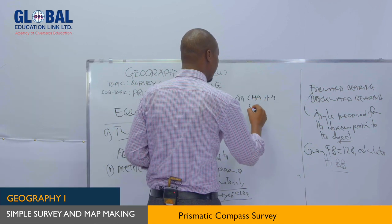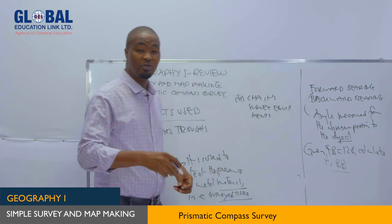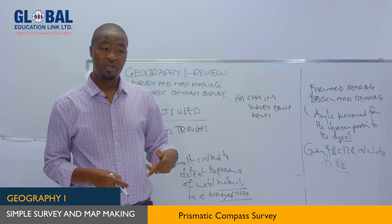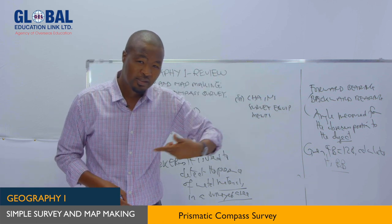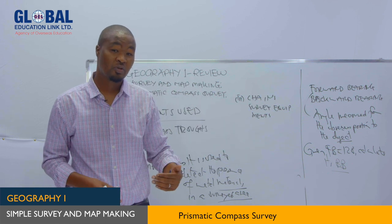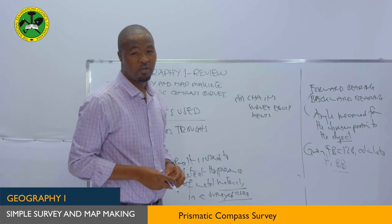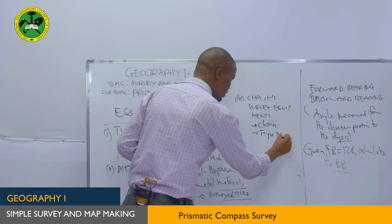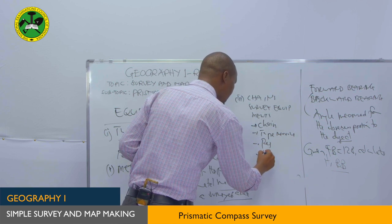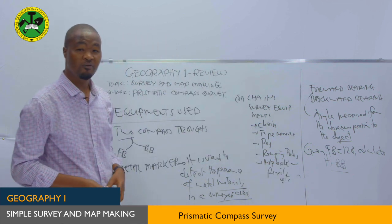We also use chain survey equipment for measuring the linear distance between two points. This includes chain, pegs, ranging poles, notebook, and pencil — all used for measuring the linear distance between points when recording forward and back bearings.